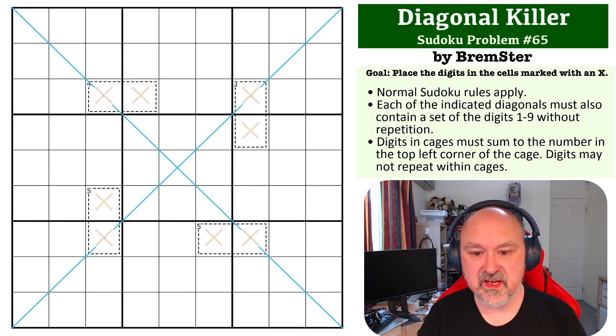The diagonals must also contain the digits one to nine without repetition, and killer cages where digits cannot repeat within cages and must sum to the number in the top left corner of the cage. There is a link below to where you can try this problem for yourself. I'm going to wait a few seconds so you can pause the video and then I'll be back to explain how this one works.